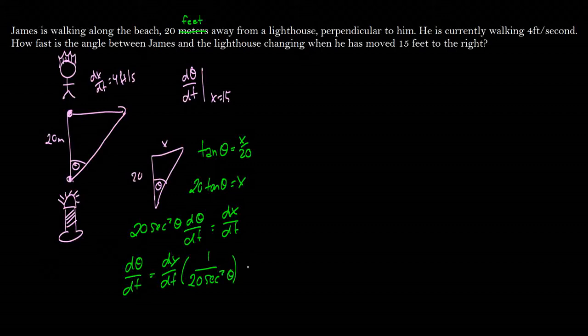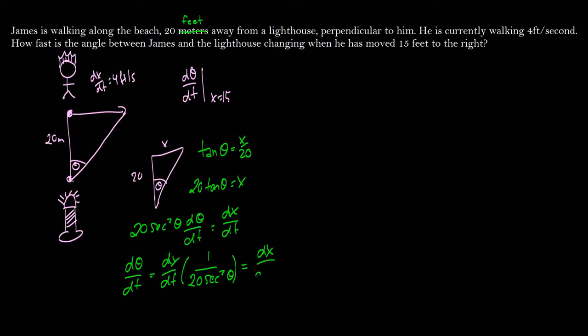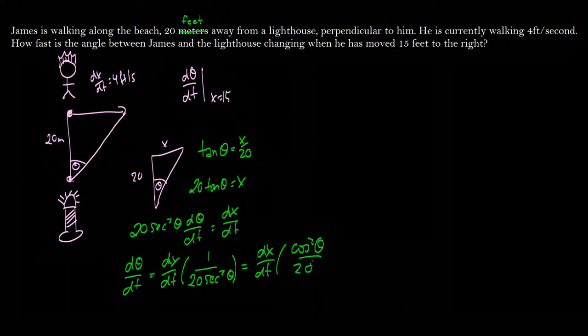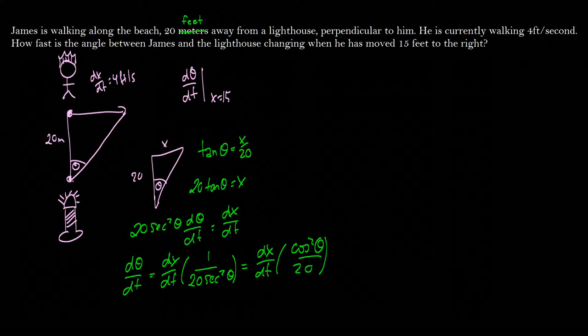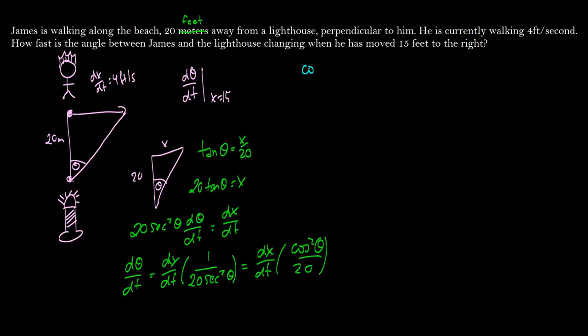But we don't like dealing with secant squared thetas. So we're going to rewrite this using our trig laws as dx/dt times cosine squared theta over 20. And now we just need to start plugging things in. So the only thing we don't know is we don't know what cos squared of theta is.